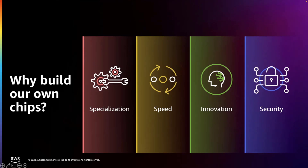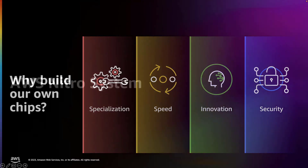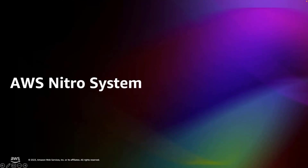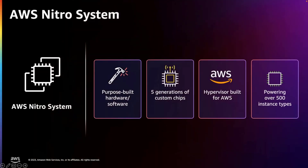And finally, security. Nitro provides a mechanism to enhance the security of our servers through a hardware root of trust, a verification of firmware on the server, and limiting interactions with the host to a narrow, authenticated, and auditable API. In a nutshell, Nitro is a fundamental rethink of how virtualization in the cloud should be done. The Nitro system is a combination of hardware, software, and purpose-built chips built with the AWS environment in mind. Over time, there have been five generations of custom chips. It's a purpose-built, custom-built hypervisor built just for AWS, and it's now powering over 500 different instance types.